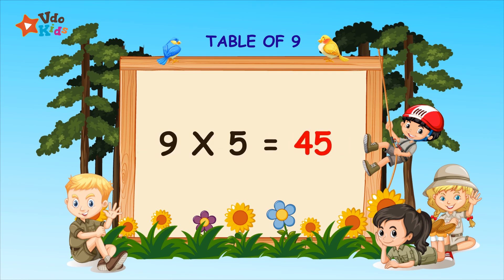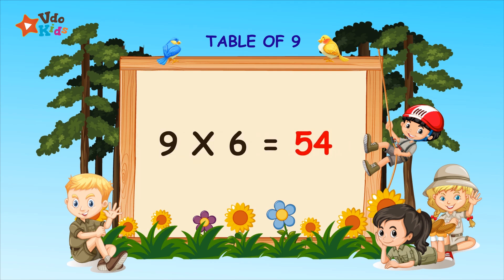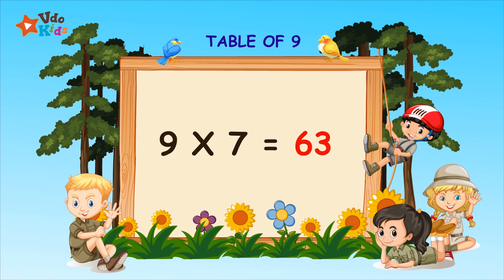9 fives are 45. 9 sixes are 54. 9 sevens are 63.